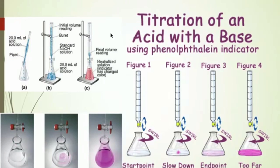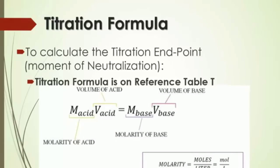You can see from the series of images here what a titration looks like. The burette and the flask below are filled with different substances — one is an acid and the other is a base. As an indicator is added to the flask at the bottom, it will change color once the pH is neutralized. The equation for titration is found on reference table T. This equation is very similar to the equation we used for Boyle's law, because molarity is how we represent the concentration of a solution.